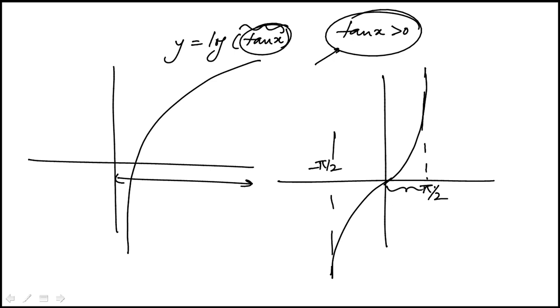We know that has to be restricted to 0 to pi over 2. So one piece of the domain is that x is between 0 and pi over 2.